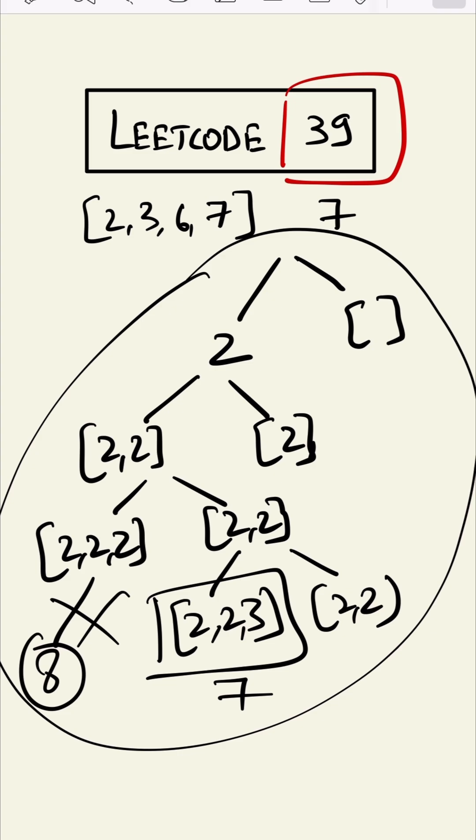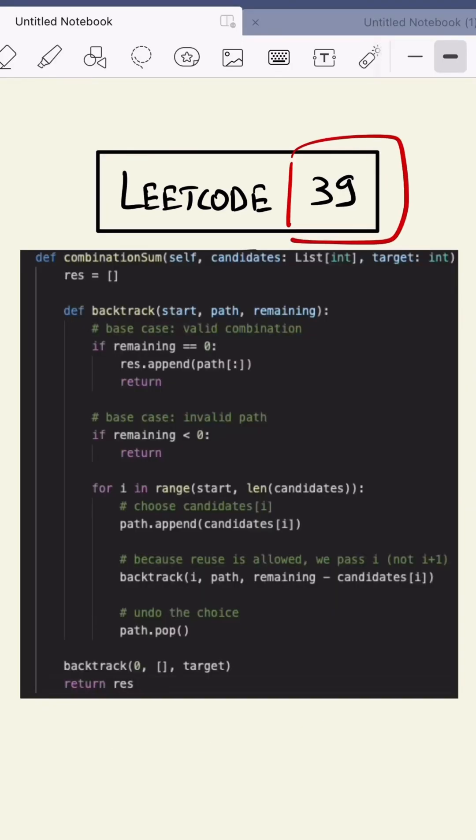This is our code. As we can see, if the remaining is equal to zero then we are appending that into our result. If the remaining is less than zero then we are invalidating that path. If the remaining is greater than zero then we are using this code in which we are appending the candidate. And since reuse is allowed we are passing i, not i plus one.